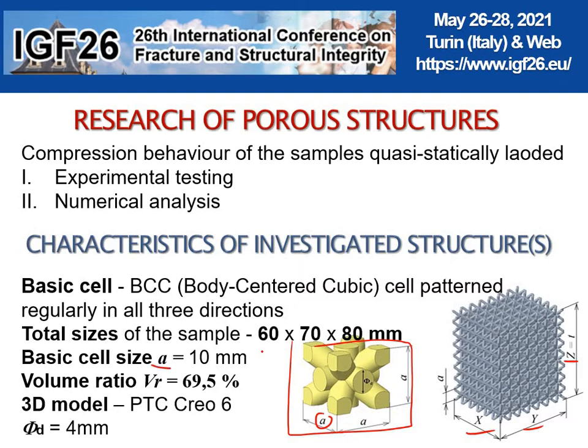The dimensions of individual experimental specimens were controlled by the relation X × Y × Z = 6A × 7A × 8A. Taking into account a cell size of 10 mm, the total size of the sample is 60 × 70 × 80 mm.